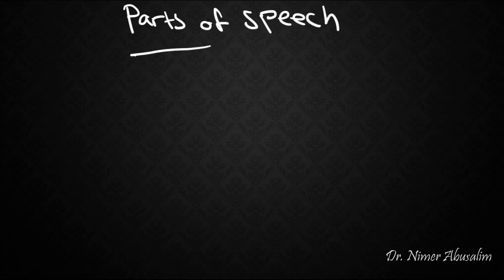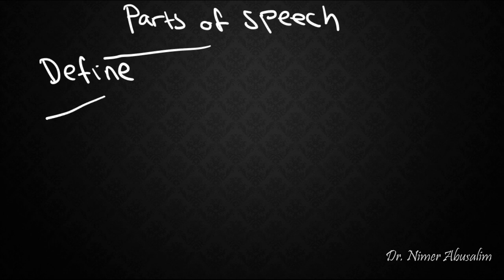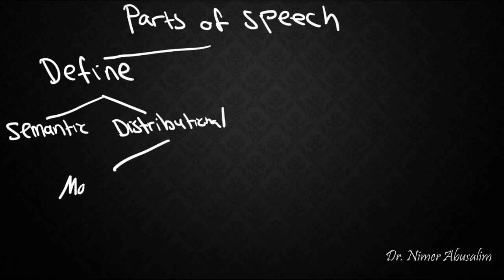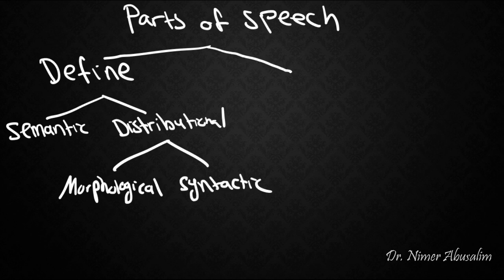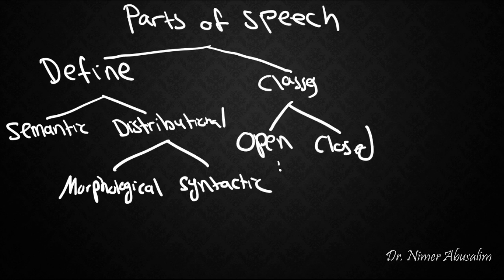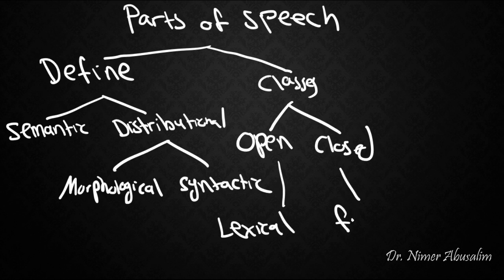So in today's class, we talked about parts of speech. We talked about how to define parts of speech. And we said that there was a semantic definition and there was also a distributional definition, which could either be morphologically based or syntactically based. We also talked about the classes, which could either be open or closed. We said that under the open classes were the lexical categories and under the closed were the functional categories. Hope that's clear. See you in the next lecture.